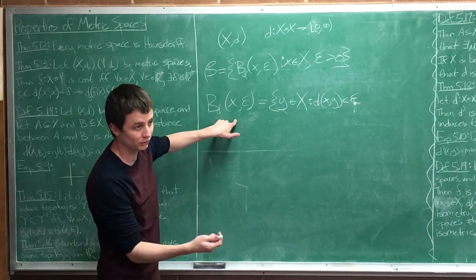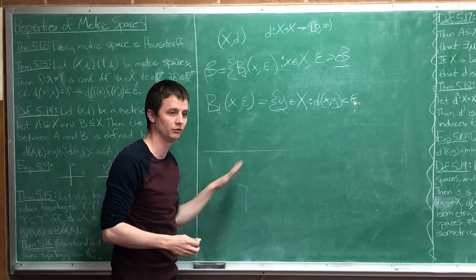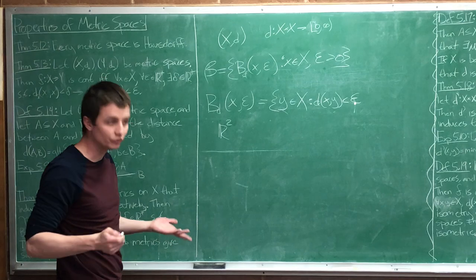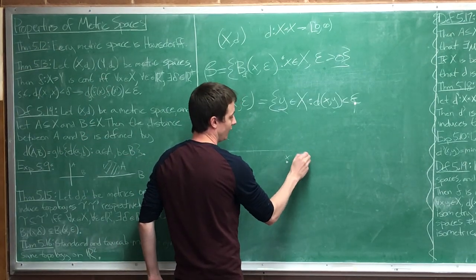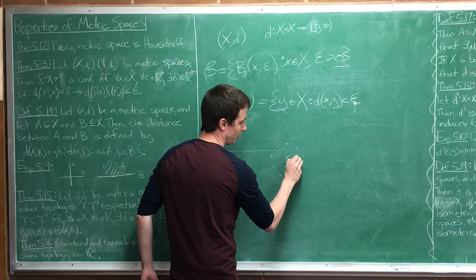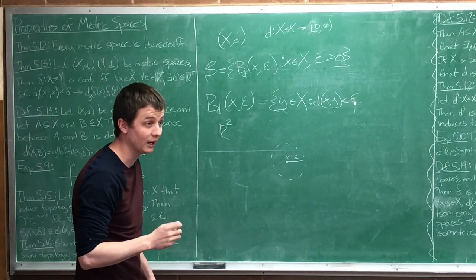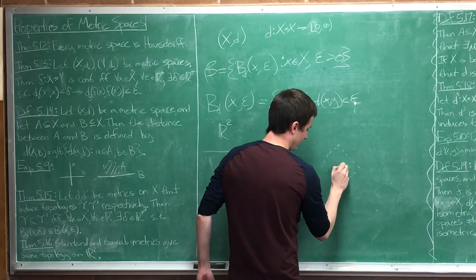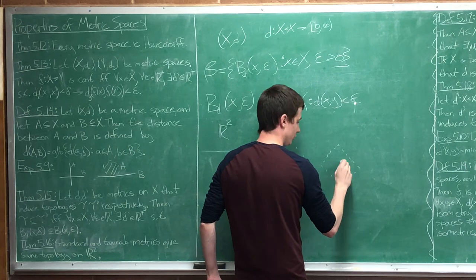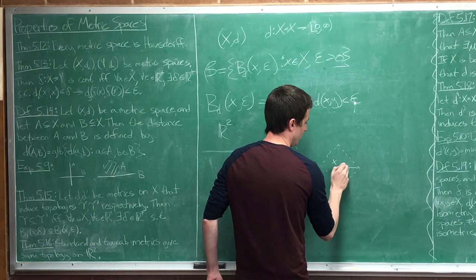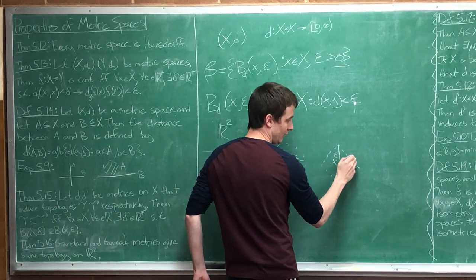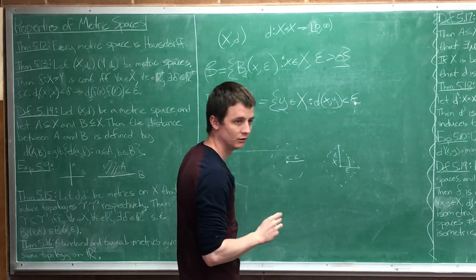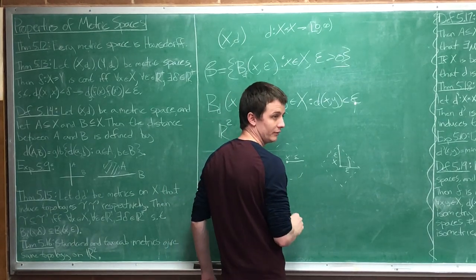Let's draw out some open balls real quick using some different metrics to help you see it - we'll always do it in R². Using the Euclidean metric, if this is a point x, that open ball looks like exactly what we expect - a circle of radius epsilon. Now let's look at the taxicab metric. The distance from here to here is this distance plus this distance - it looks like a diamond shape, where each axis distance equals epsilon.